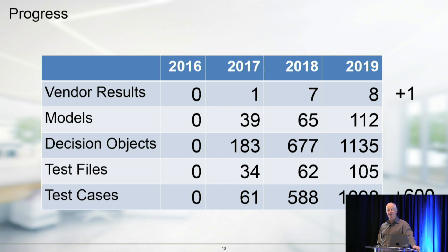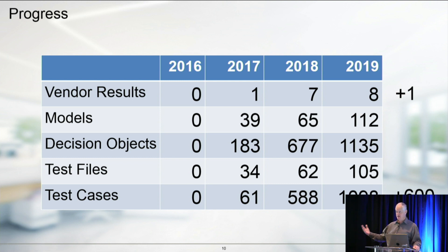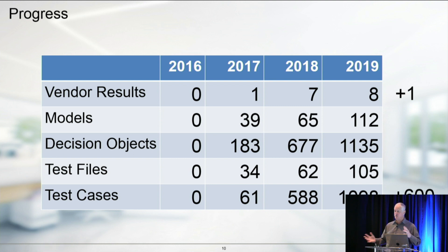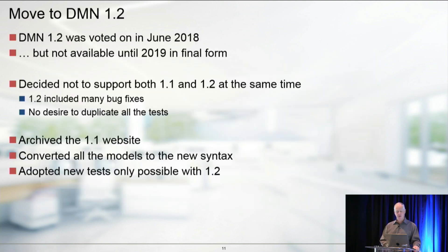My original goal was to get to a thousand test cases. The plus one shown here is because someone new is about to join - he doesn't have results yet, but he's submitted another 600 cases. Those test cases are going through review. We need to review them and make sure that they're correct, but I'm expecting that we'll have 1,600 cases in a few months.